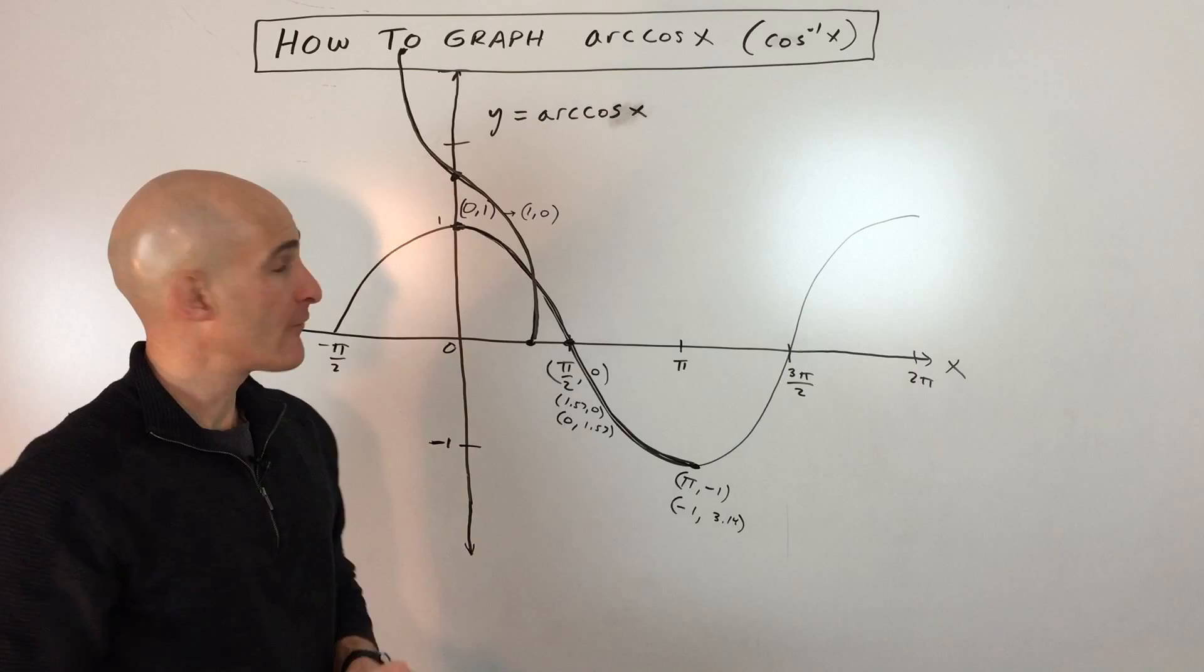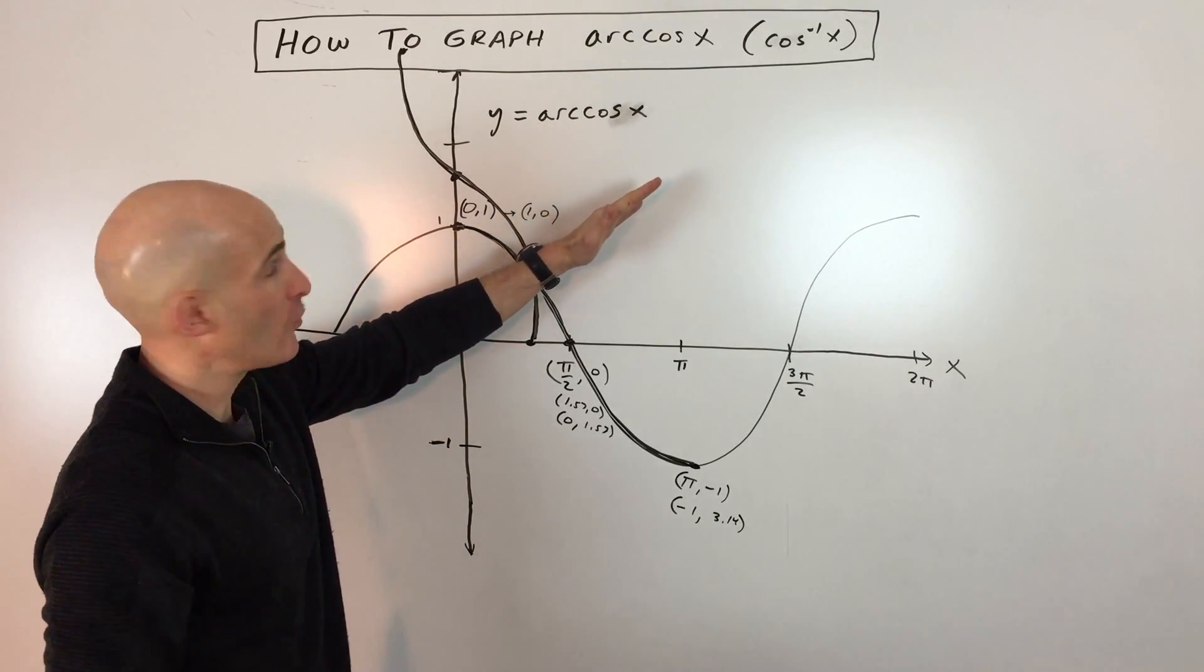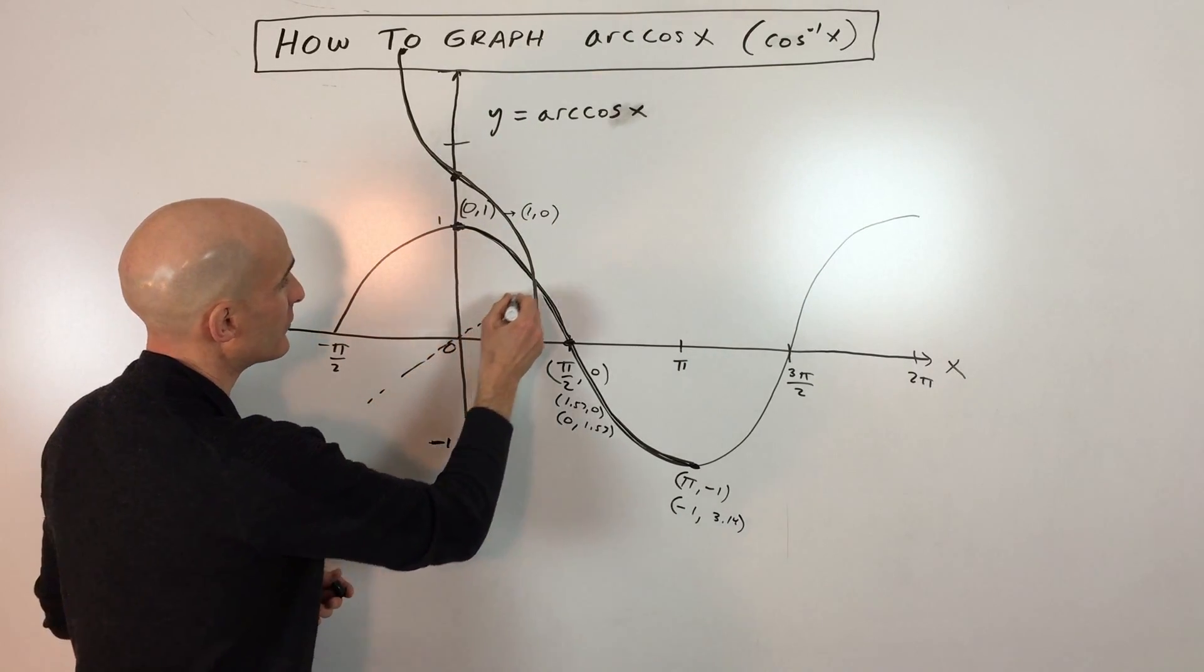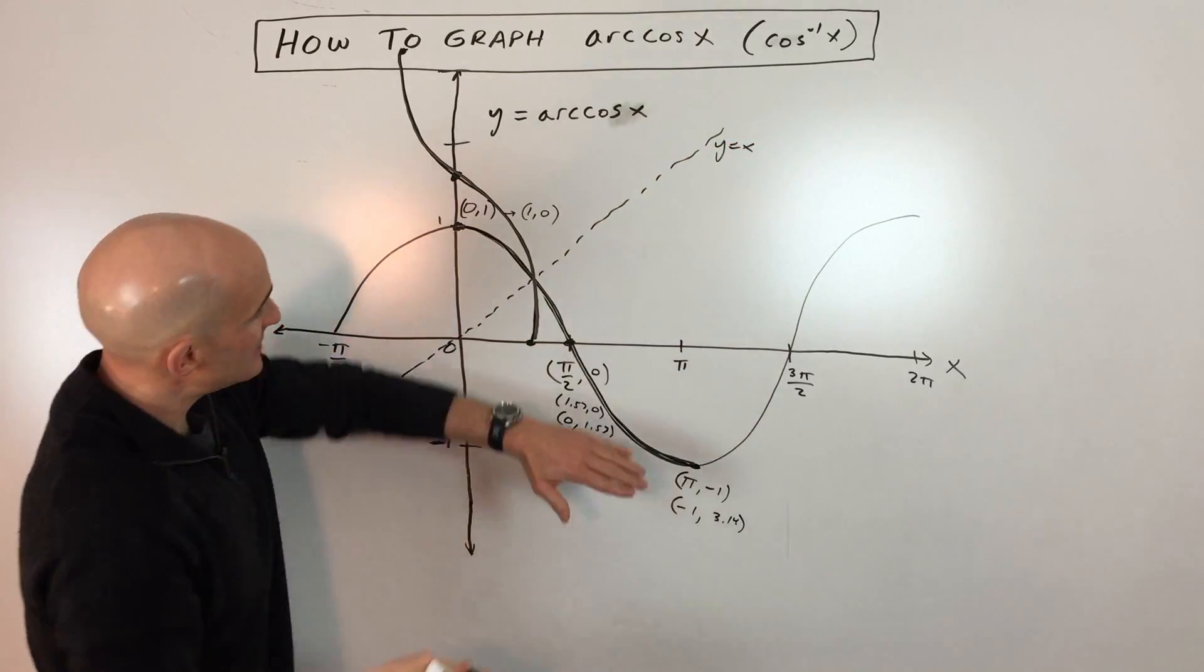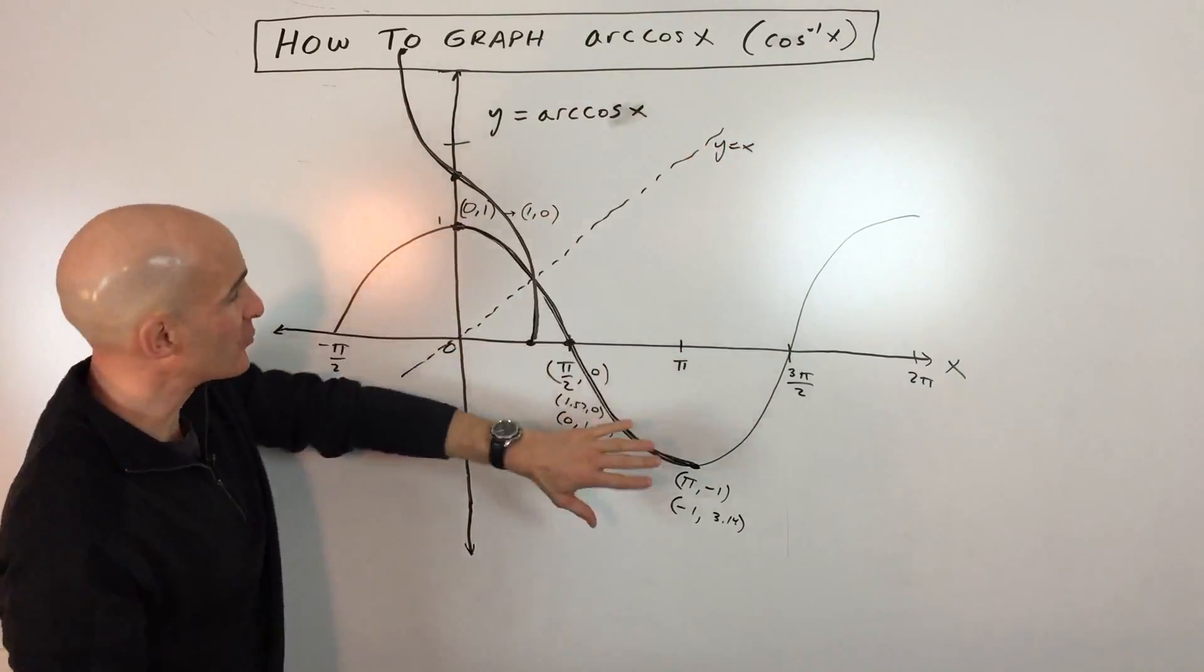Now when you graph the inverse of a graph, what you'll notice is that it's a reflection over the line y equals x, this 45 degree line. So if I sketch this in here, roughly, the line y equals x is right there. And you can see that this graph is the mirror image over this 45 degree line.